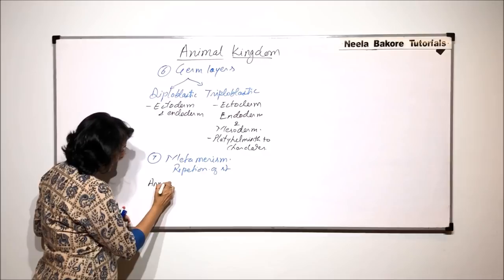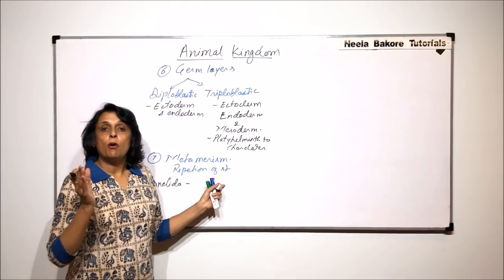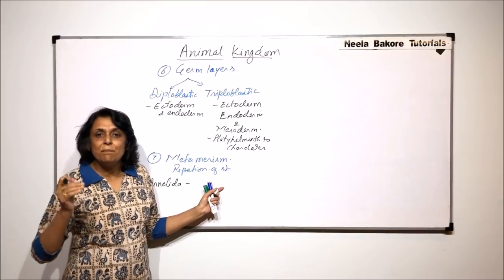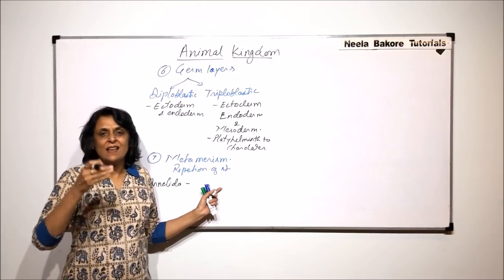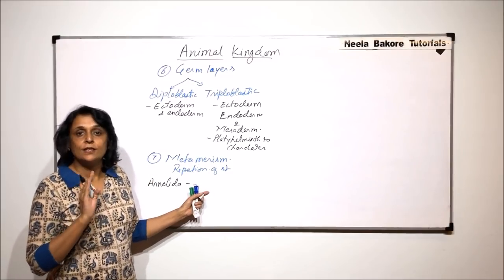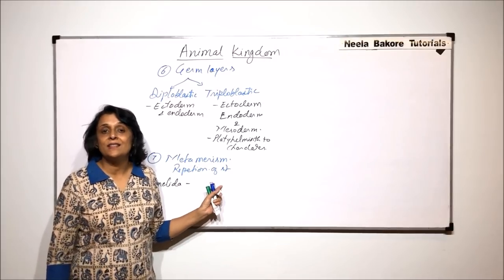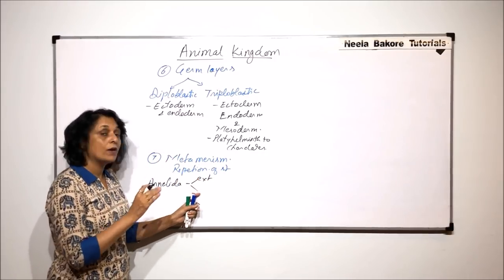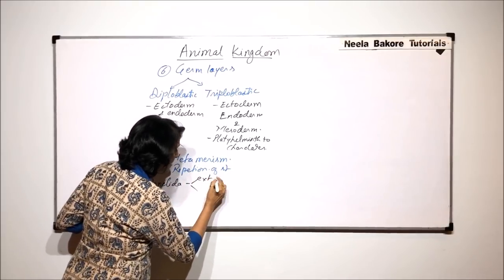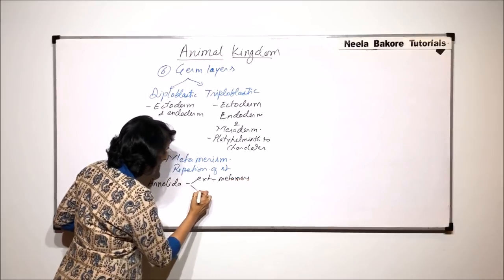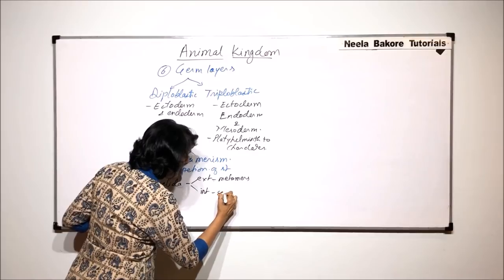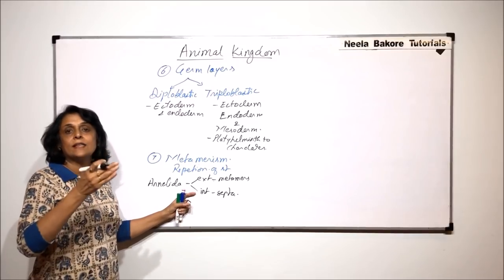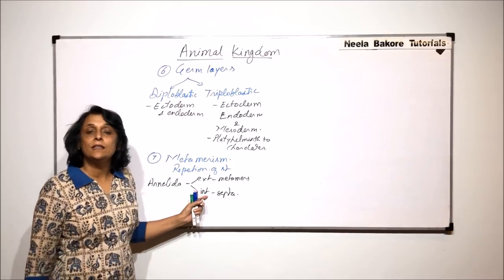For example, in Annelida — that is, in earthworms — externally we find there are segments, and each segment is separated from the other by a depression, a sulcus, which gives the annular appearance. So there is external segmentation. Internally also, the body segments are separated by septa. These external segments are called metamers, and internal segments are separated by septa, so there is both external and internal repetition.